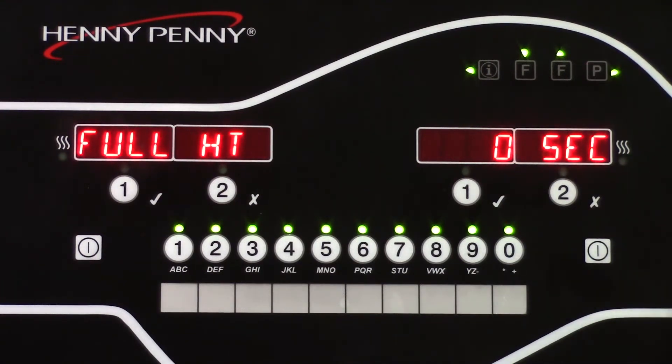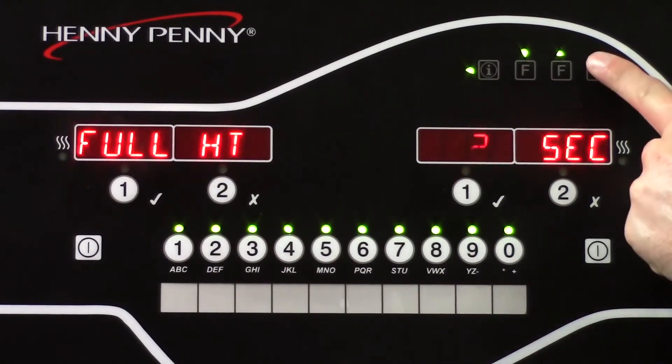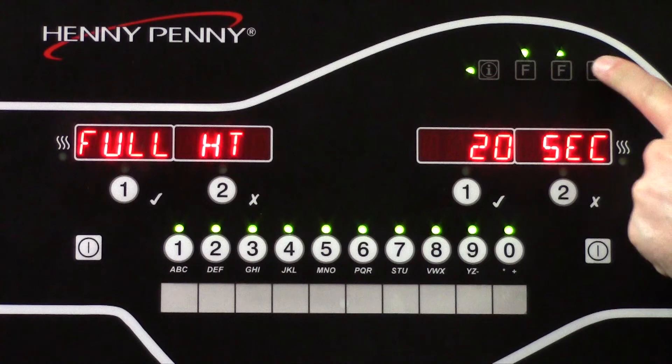Full heat is like cook anticipation. 20 seconds is standard for this setting. This means that when a timer is started, the fryer will call for heat for the first 20 seconds in anticipation of cold or frozen product being dropped into the oil. 20 seconds is normally set by default.